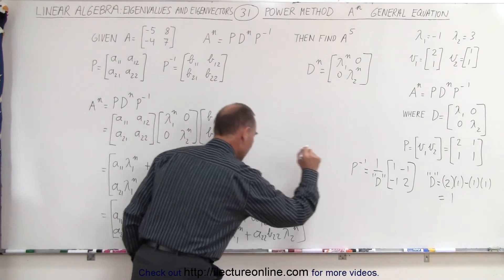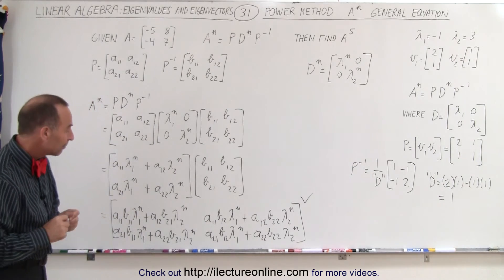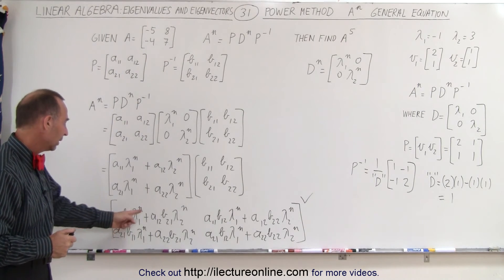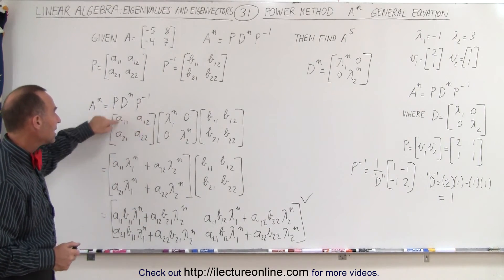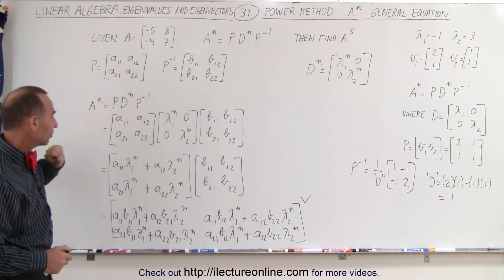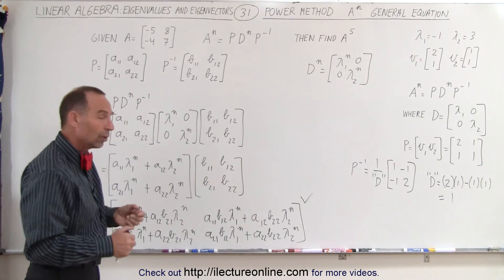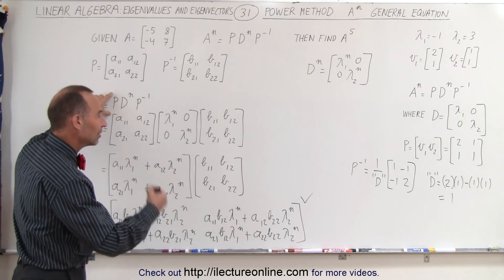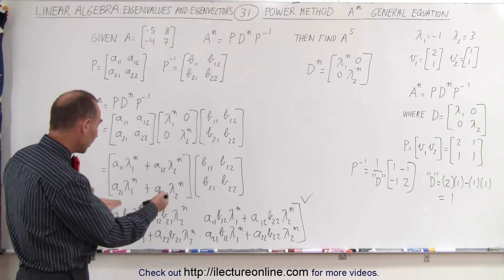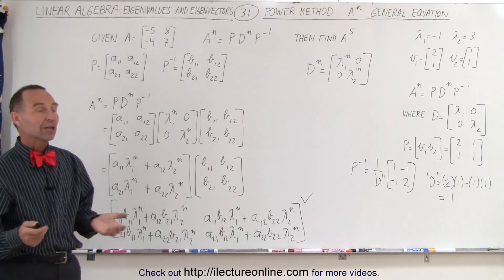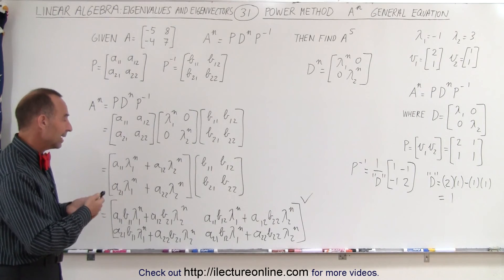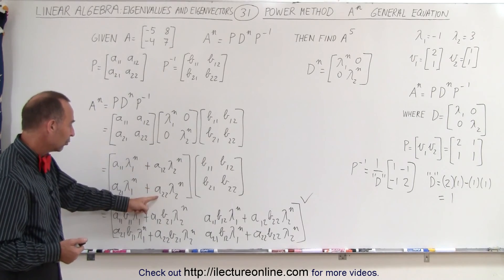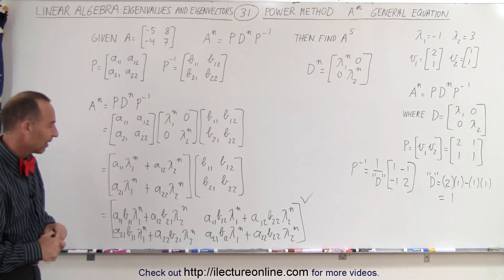And that would be the generalized formula of a 2 by 2 matrix raised to the n power. A11, A21, A12, and A22 are simply the elements of the eigenvectors of the matrix. And B11, B21, B12, and B22 are simply the elements of the inverse of the P matrix, which is the matrix containing the eigenvectors. So that's what the generalized formula looks like. If you want to calculate A to the n power for whatever n, all you need to do is figure out A11, A21, A12, A22, and the corresponding elements of the inverse of that matrix.